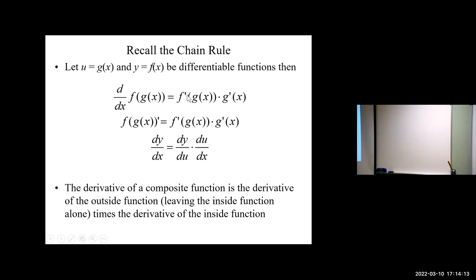Here's the chain rule from Calc 1. We use the chain rule when we have a composite function — basically inputting one function into another. So f of g of x: its derivative is the derivative of the outside, leave the inside alone, times the derivative of the inside. In Leibniz notation: dy/dx = dy/du times du/dx. Notice if you cancel out the du's, like multiplying fractions, you just get dy/dx. Pay close attention to that, because if you can follow that, you can set up the chain rule.